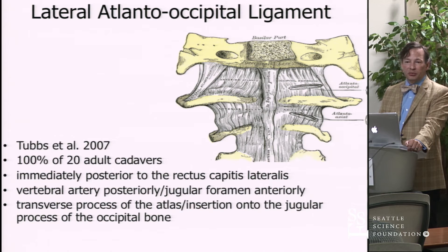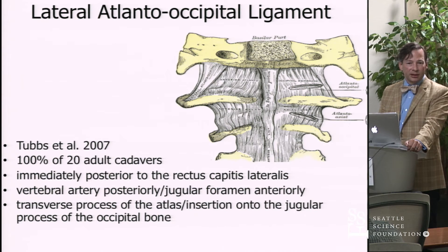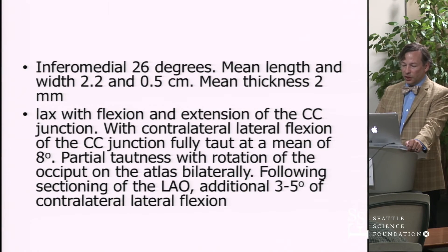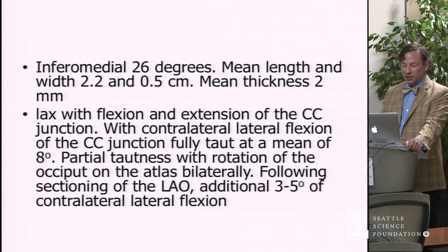The lateral atlantooccipital ligament — I would be surprised if many people have even heard of this ligament. It's in some of the very antiquated anatomy literature, but it's present in 100% of our cadavers. It's hard to get to, which may be one reason it's rarely discussed. It's just posterior to the rectus capitis lateralis, which you basically have to take the head off the spine and then approach from the front after removing everything anteriorly — mandible, face, et cetera. Interestingly, it's a landmark and would probably serve surgeons in this area, as it very clearly separates the vertebral artery posteriorly from the contents of the jugular foramen anteriorly. It has a little inclination from lateral to medial of about 26 degrees.